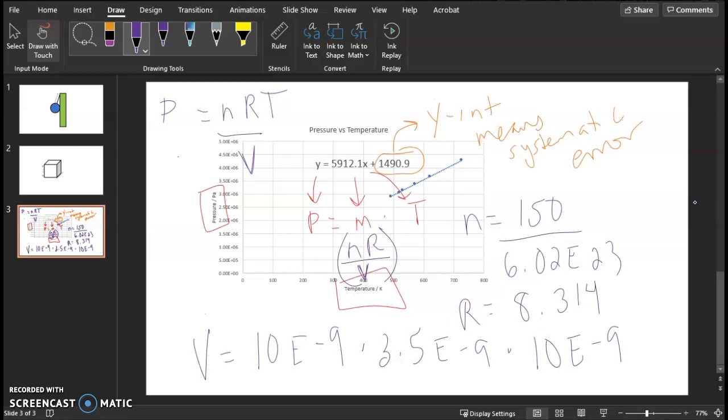And I get a slope value then that is 5918. And the units would be—actually I could just do Pascal per Kelvin, because the slope units are the rise units over run units. And you can see, actually I would round this up a little bit, you can see that it's pretty close to the value here.